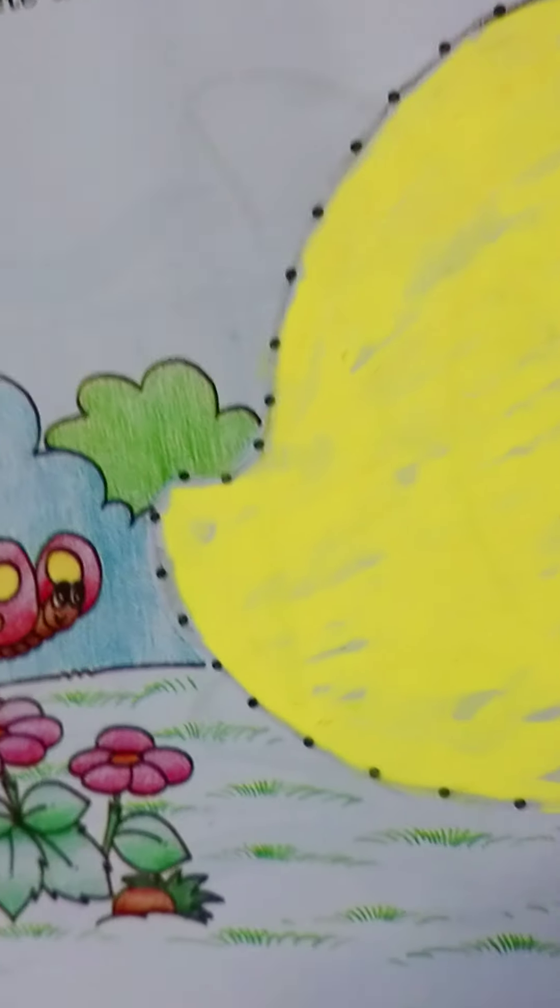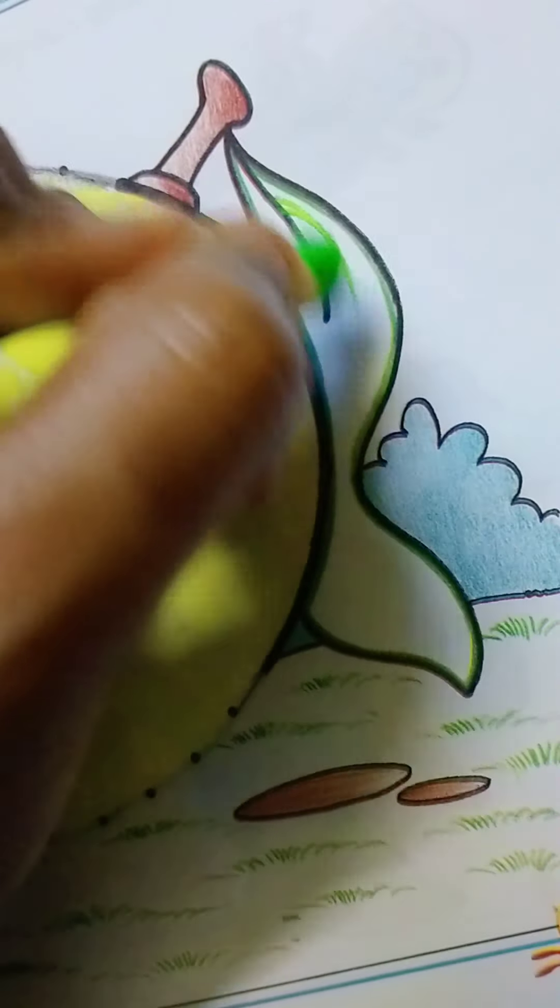Yes, so our color is complete. And then we color our mango leaves. The mango leaves, our color is green, light green, right? And this side, deep green.